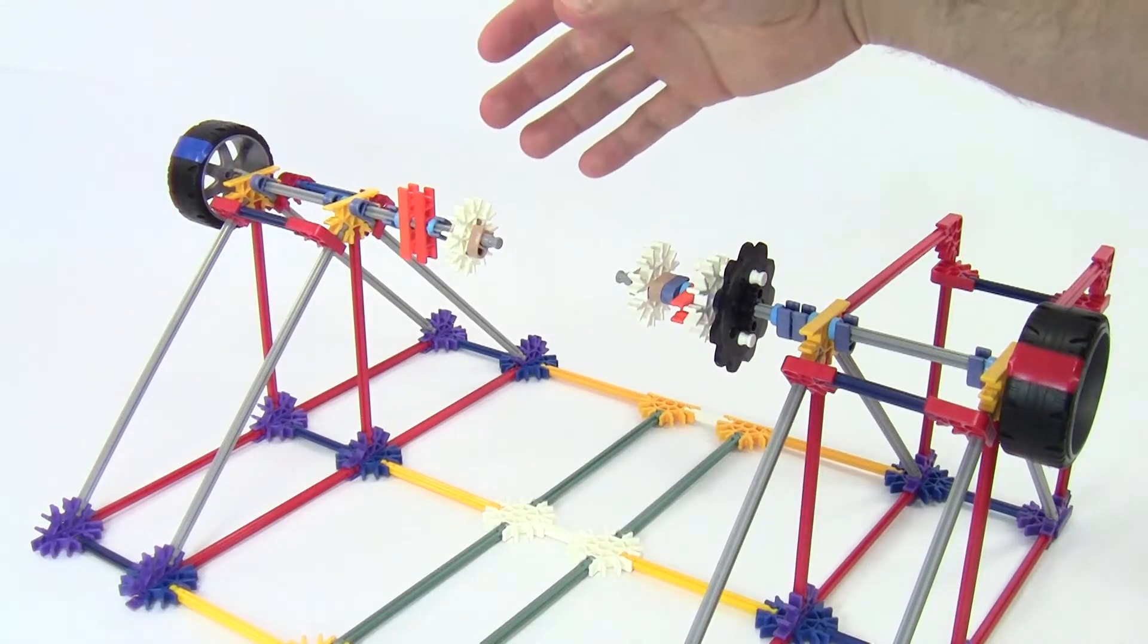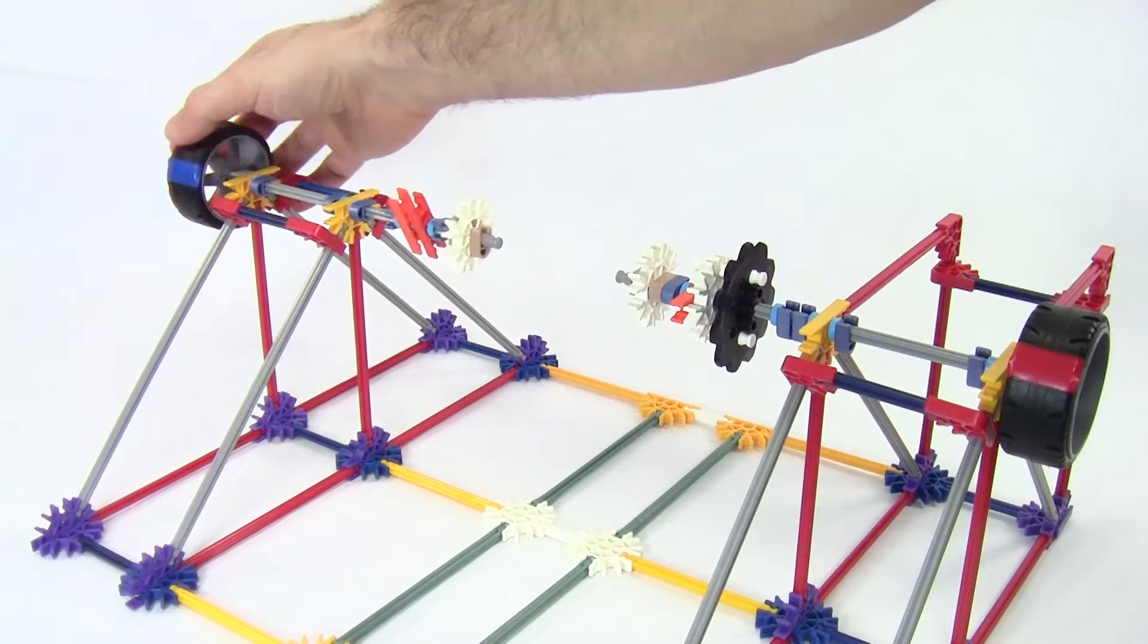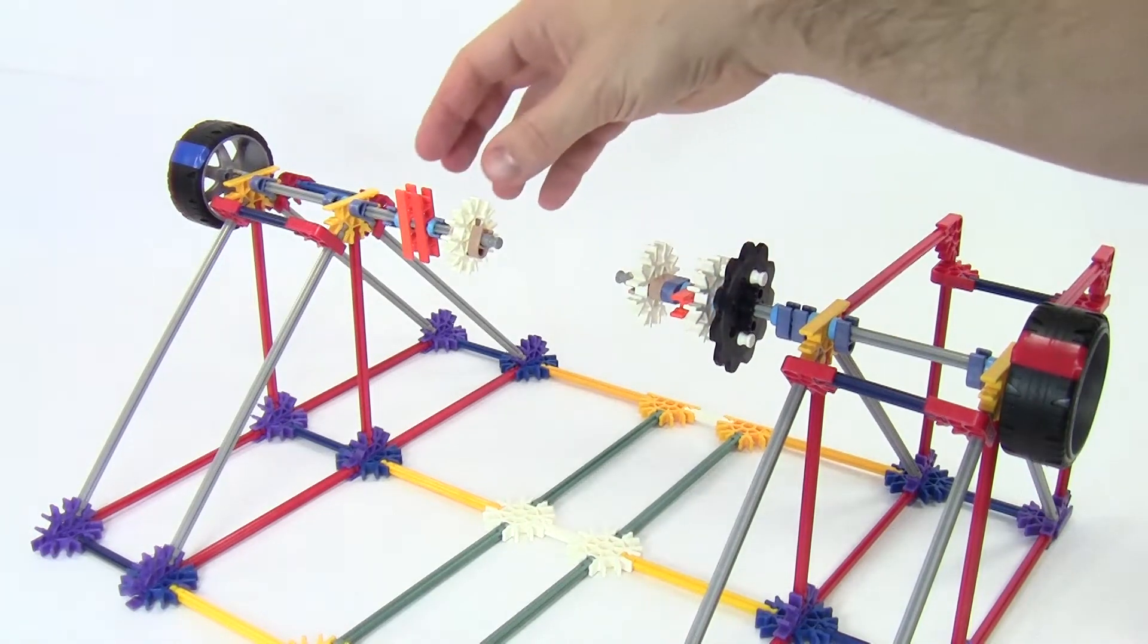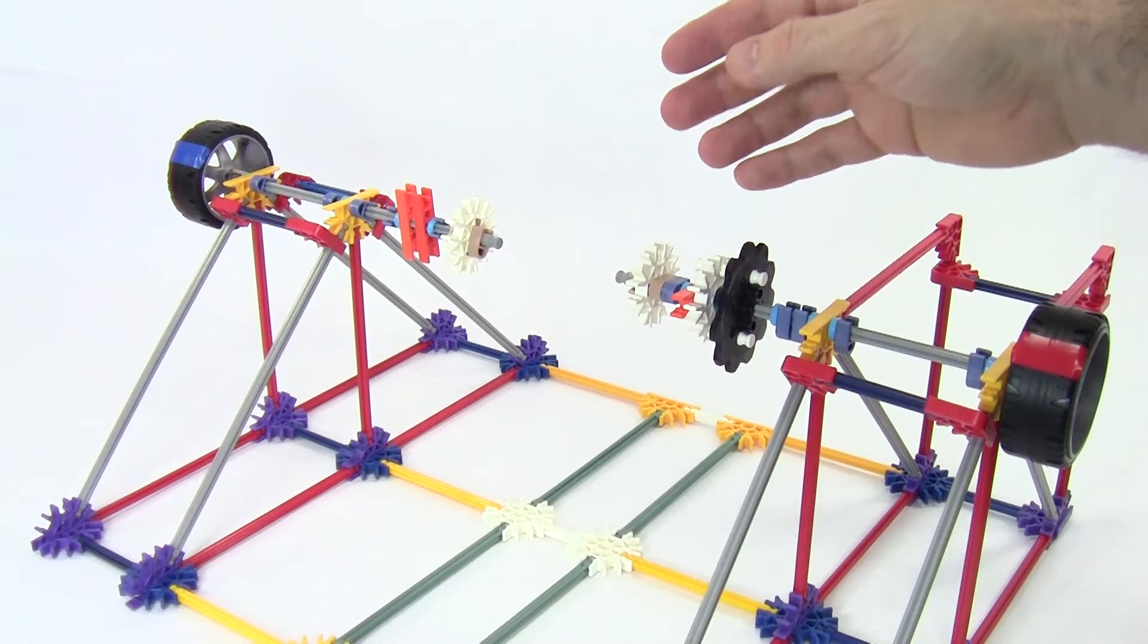So, let's zoom out again. Here we have our support structure with our two axles that can rotate independently. Each one has a wheel and a bunch of pieces on the inside that we're going to be connecting things to as we build.